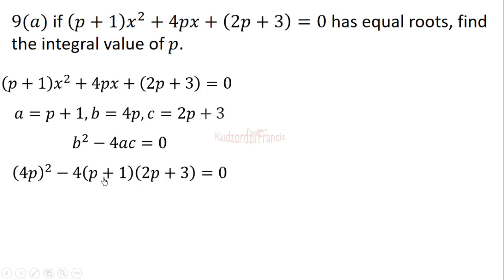Now we expand: (4p)² - 4(p + 1)(2p + 3) = 0. This gives us 16p² - 4(2p² + 5p + 3) = 0. Expanding further gives us 16p² - 8p² - 20p - 12 = 0.